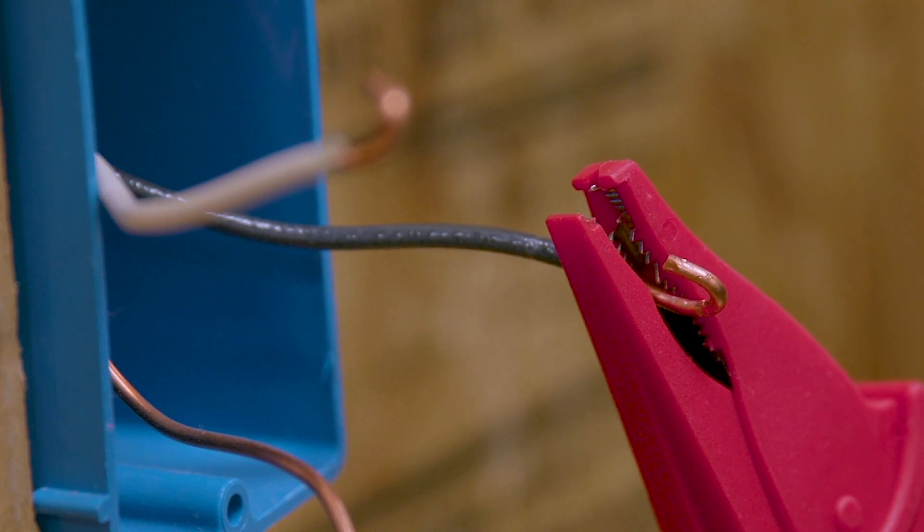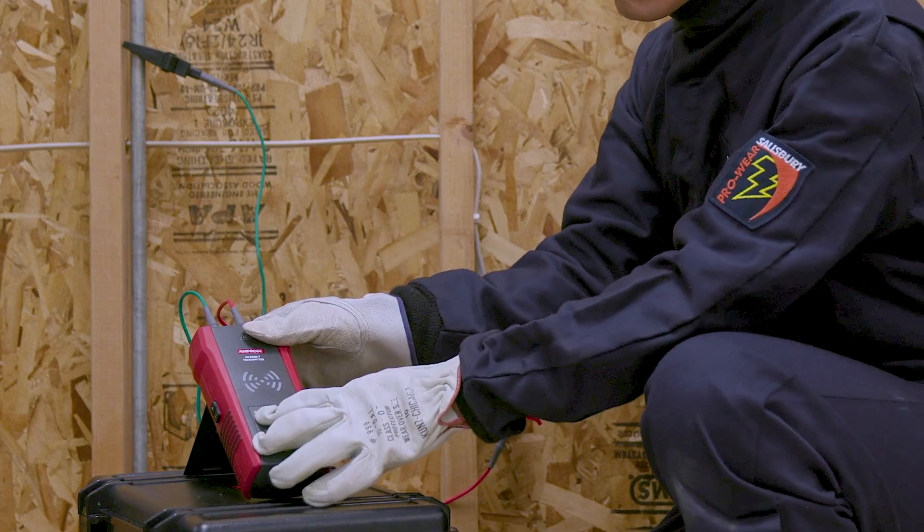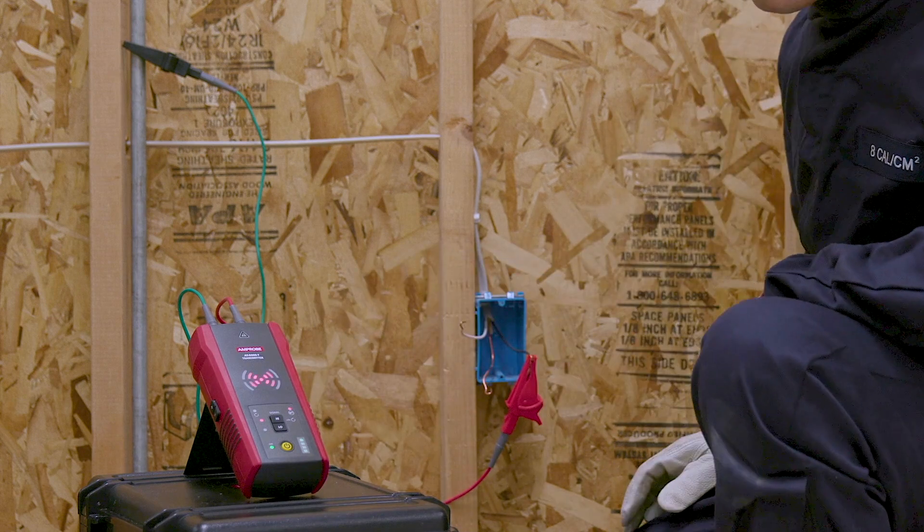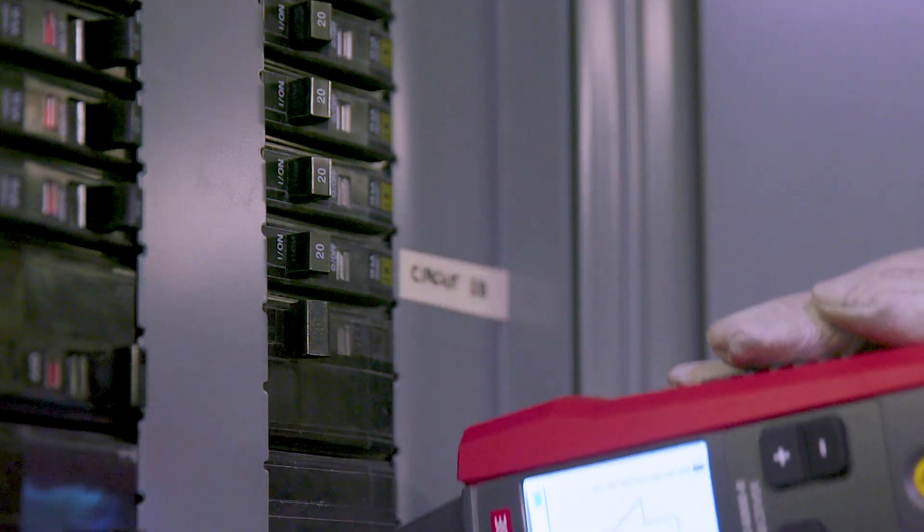Turn on the receiver and push the function button until breaker mode is selected. Scan the breakers repetitively until only one breaker is indicated.